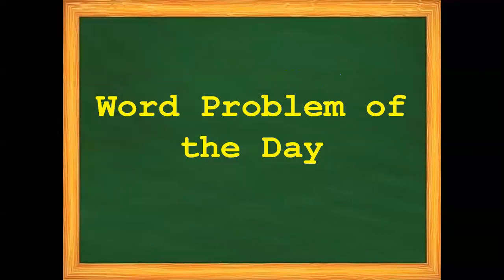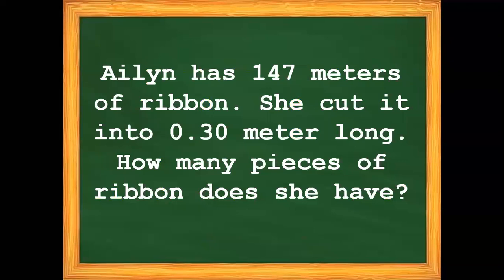For our word problem of the day: Aileen has 147 meters of ribbon. She cut it into 30 hundredths meter long. How many pieces of ribbon does she have?